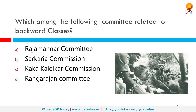Which among the following committees is related to backward classes? The correct answer is Kaka Kaleelkar Commission. In 1953, the central government established a Backward Classes Commission under Kaleelkar's chairmanship with the charter to recommend reforms for removing inequities for underprivileged people. The commission issued its report in 1955, recommending among other things that the government grant special privileges to untouchables and other underprivileged people.